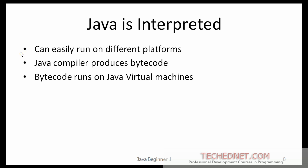Java is an interpreted programming language, and because of that it can easily run on different platforms. You could build a Java application, compile it on Windows, and take the compiled code and be able to run it on Linux or Macintosh. The Java compiler produces bytecode, and the bytecode runs on the Java Virtual Machine, or Java Runtime, which is available for a variety of operating systems.